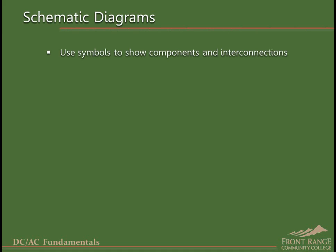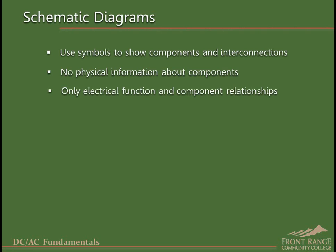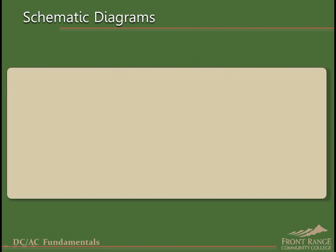Schematic diagrams use symbols to show how electrical components are connected in a circuit. Schematic diagrams provide no indication of the physical size or location of any of the components, only their function and how they are related together electrically.